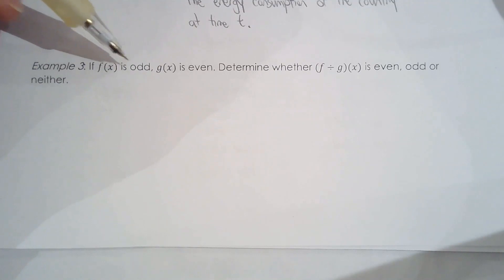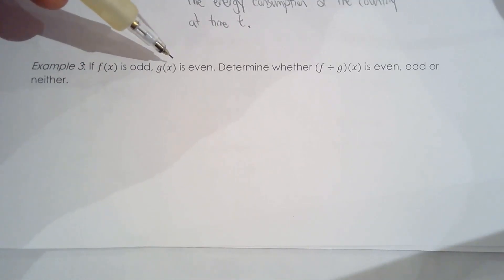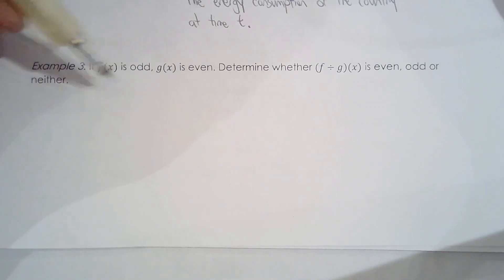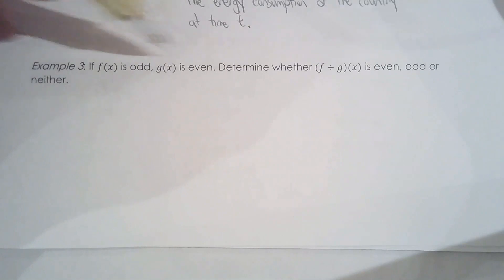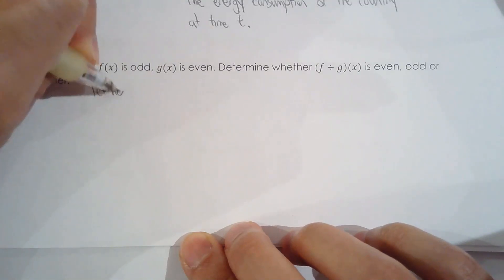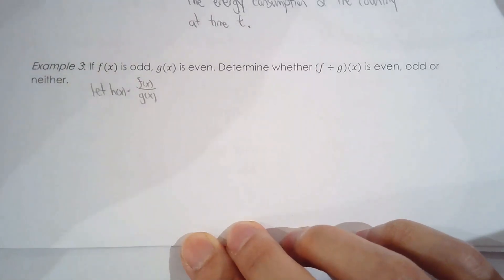For Example 3, if f of x is odd and g of x is even, determine whether the quotient of f and g is even, odd, or neither. This is a throwback to what we did at the beginning of the course. If f of x is odd, it has point symmetry about the origin, meaning f of negative x equals negative f of x. If g of x is even, it has line symmetry about the y-axis, and g of negative x equals g of x. Let h of x equal f of x over g of x — the quotient of f and g.